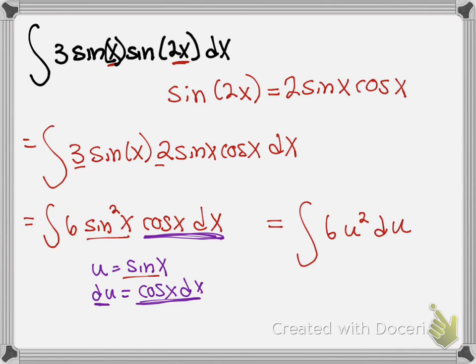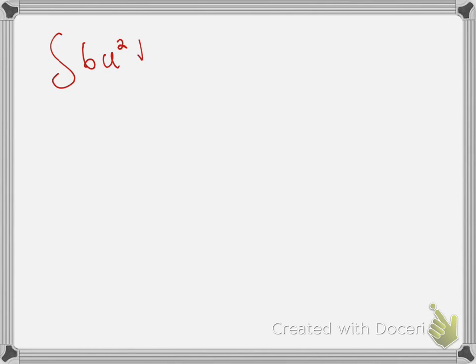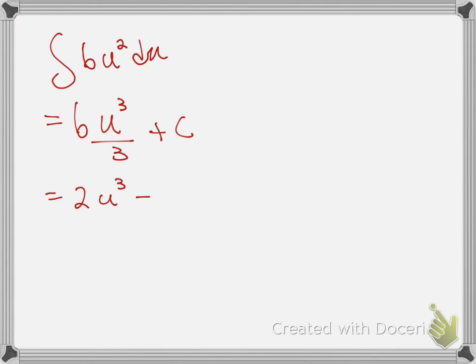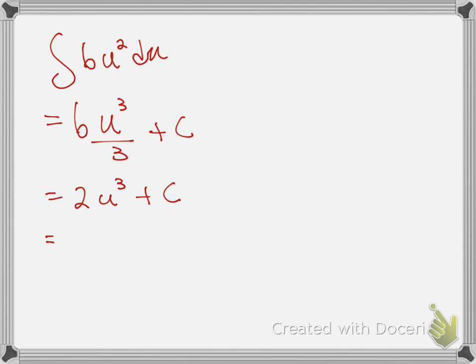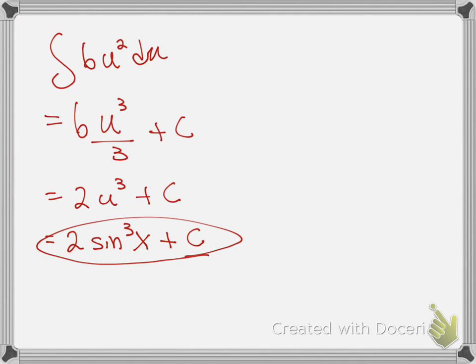The integral becomes 6u squared du. The integral of 6u squared is 6u cubed over 3, which simplifies to 2u cubed. Substituting back — u was sine of x — the final answer is 2 sine cubed of x plus c.